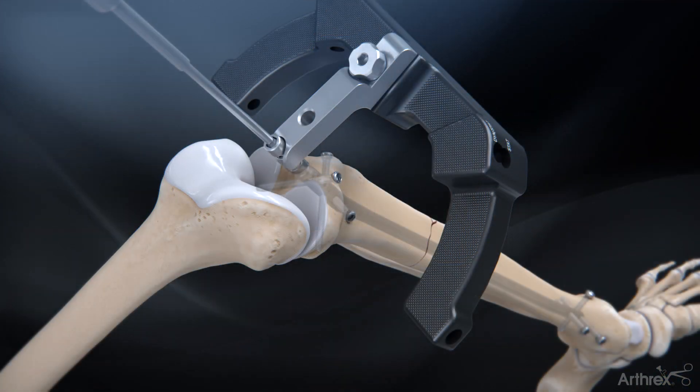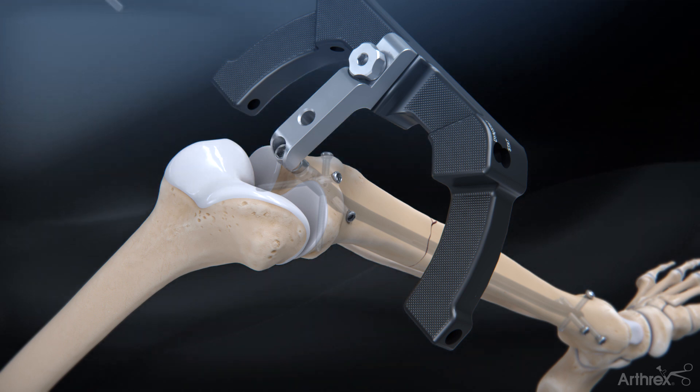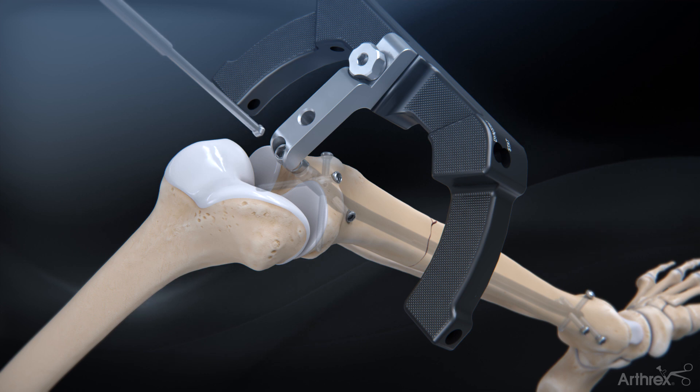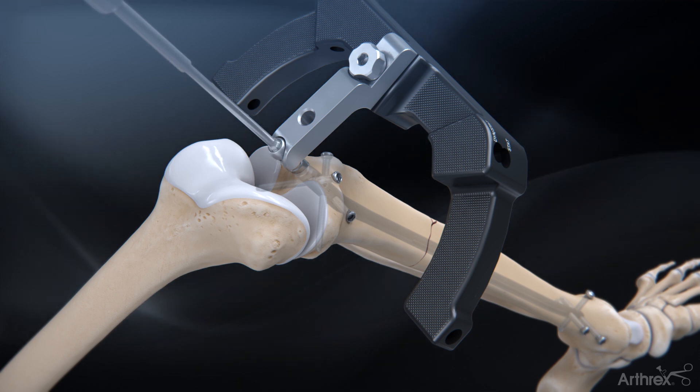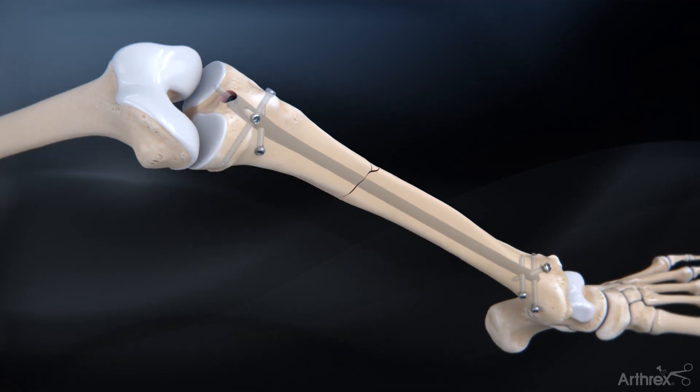Unthread and remove the compression bolt using the hex driver. Finally, unthread the locking bolt using the ball hex driver and remove the targeting arm assembly to complete the procedure.